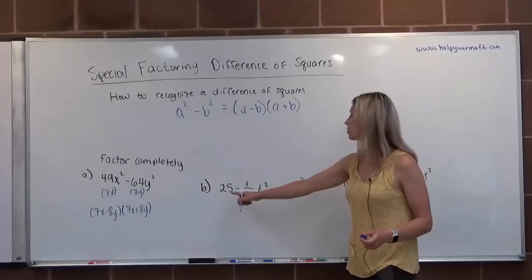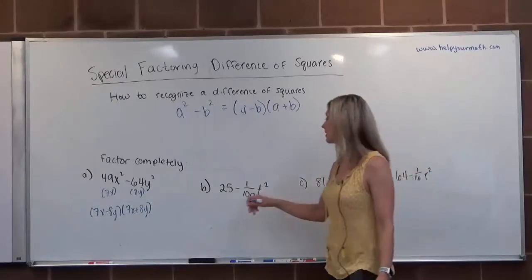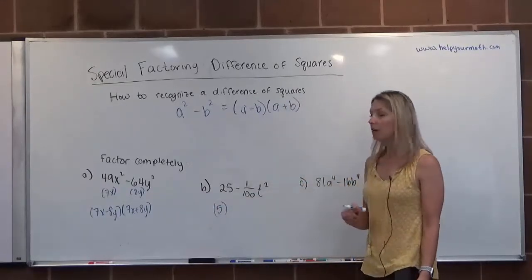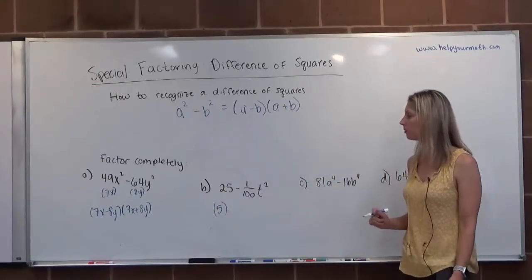Let's look at letter B. Is 25 a perfect square? Yes, it is. Its root is 5. Uh-oh, fraction. Oh no. It's okay.